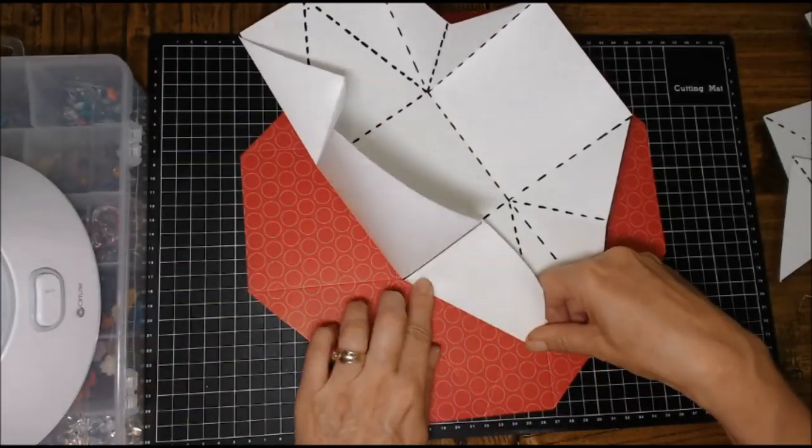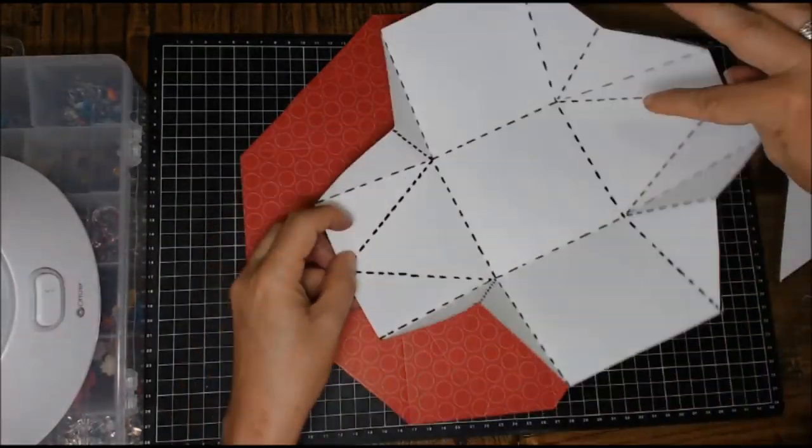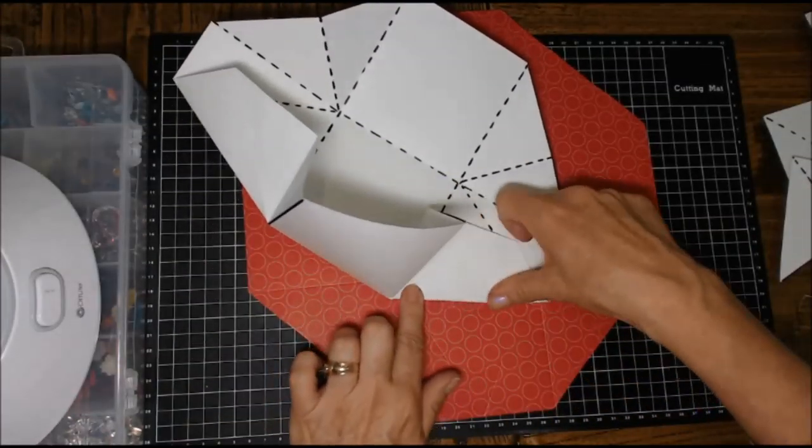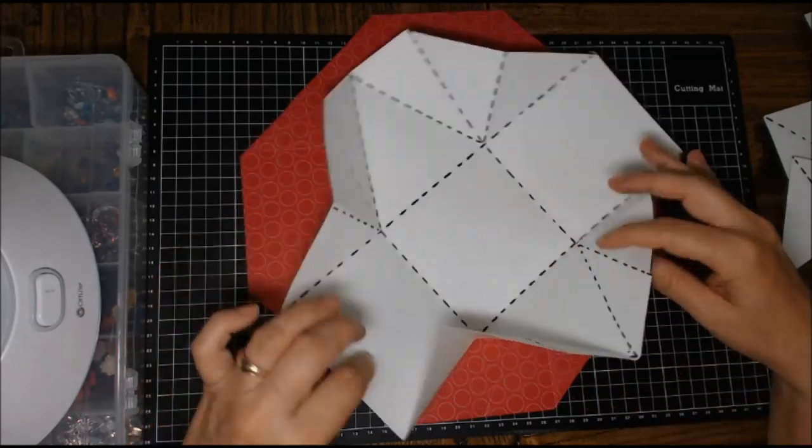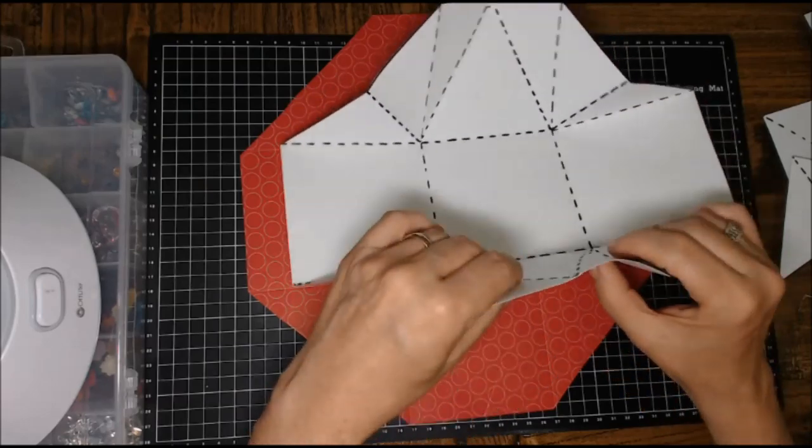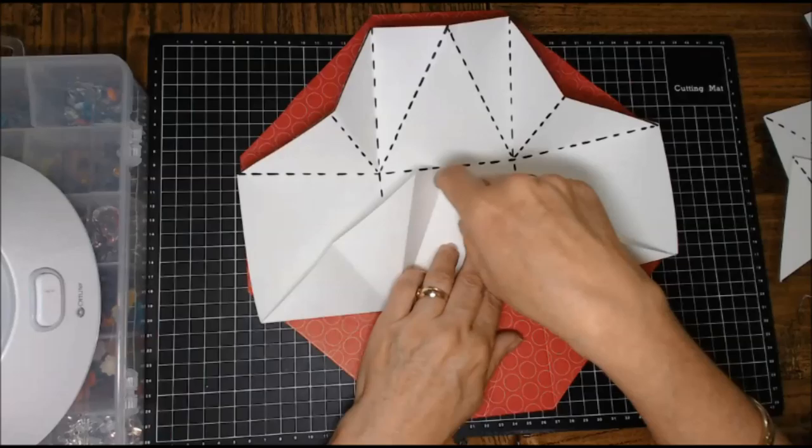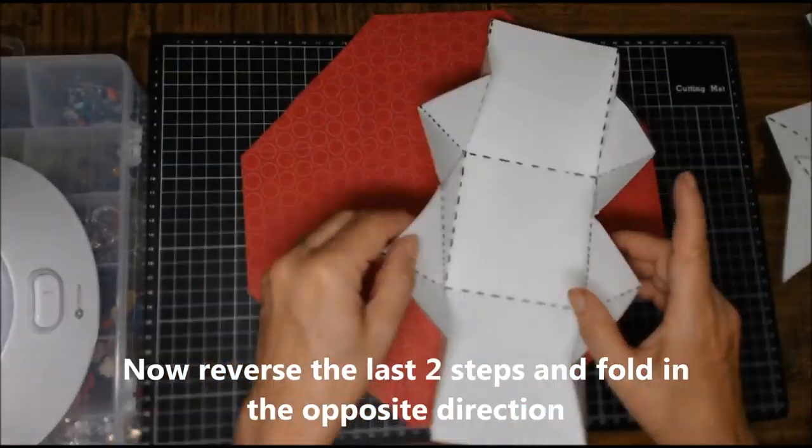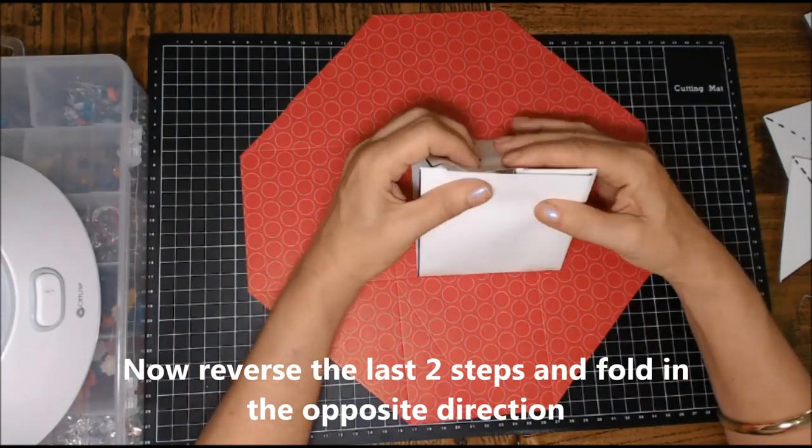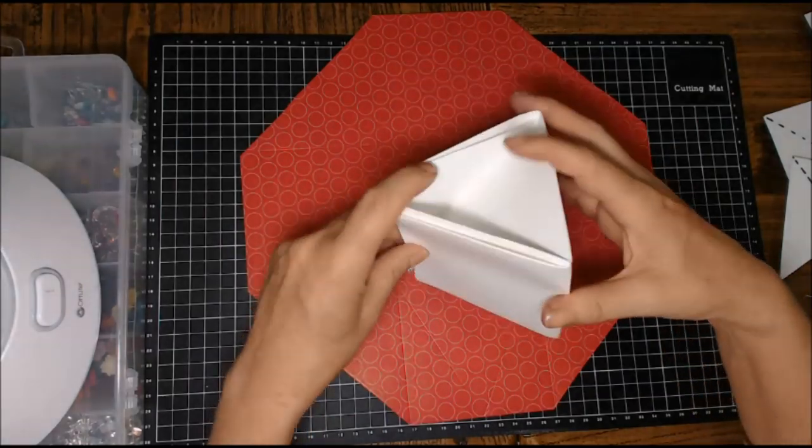Now we're going to create the bag shape by folding on those V lines that we created. I'm folding them this way first because it's really easy to do it, and then you're just going to fold them back the other way on themselves. So those Vs fold in the opposite direction now. And now this is the basis for your exploding purse or your exploding handbag.